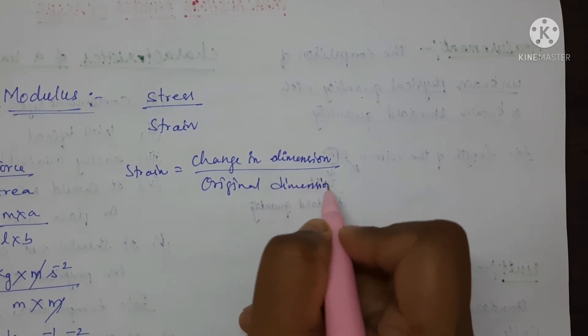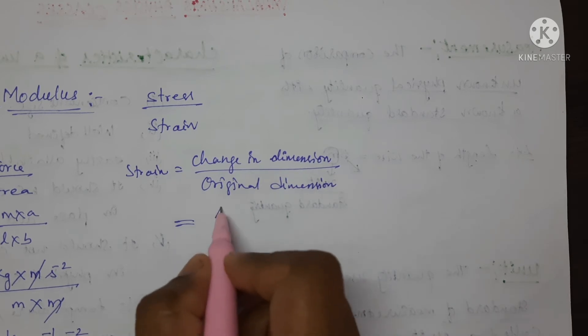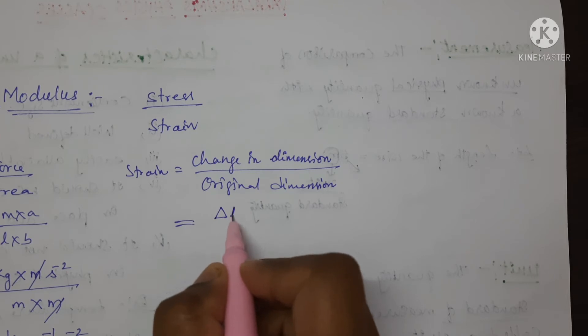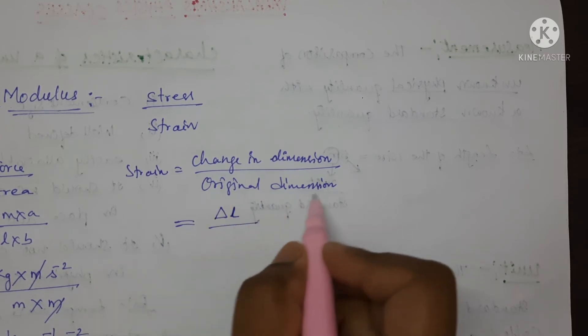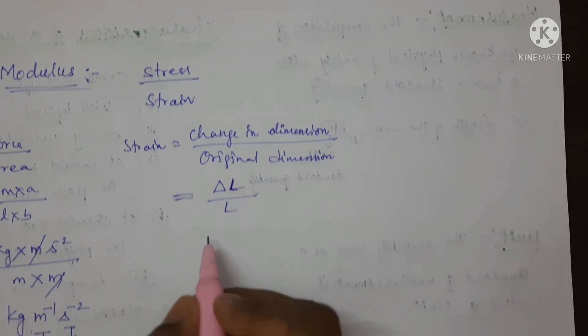For example, I am taking length as an example. So, change in dimension—change is expressed by using a Greek letter delta—length L. And original length, capital L.